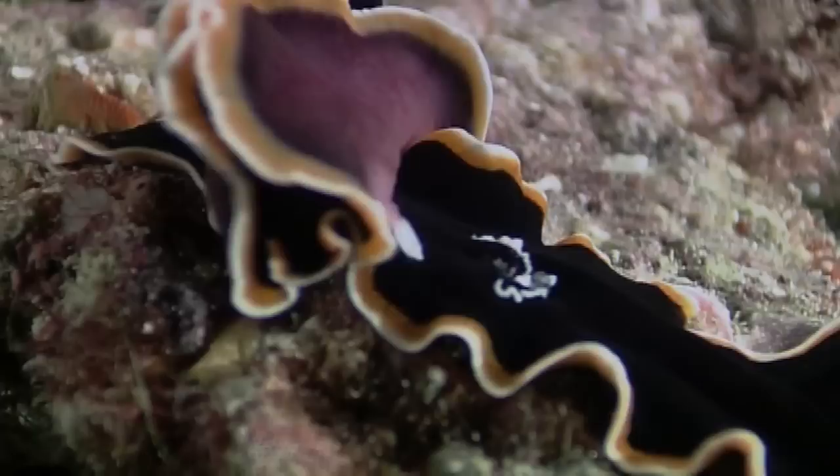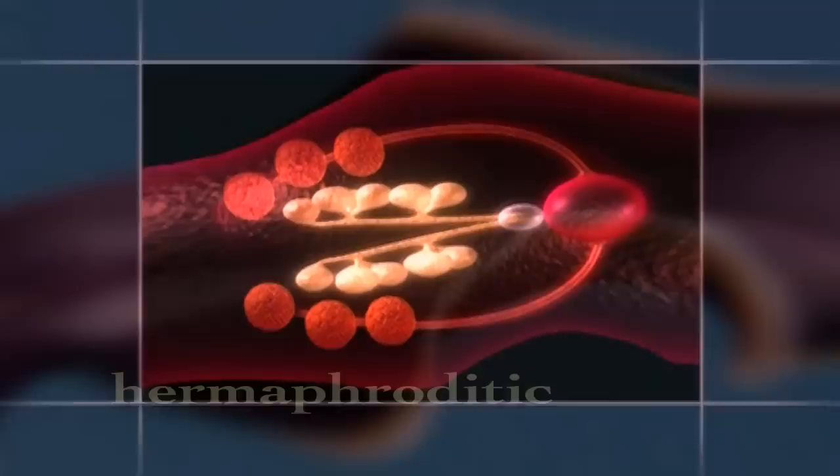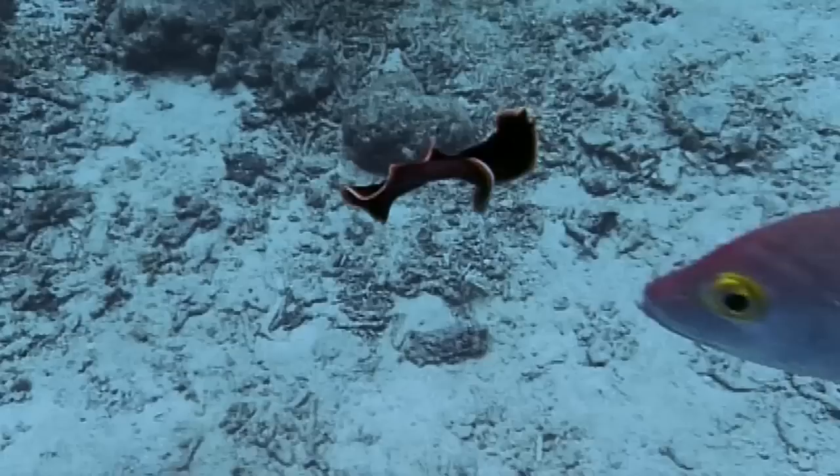Sperm can be injected anywhere on the skin where it's then absorbed. The losing flatworm must then bear the burden of motherhood, committing valuable resources to having offspring. Flatworms are hermaphroditic. They have both male and female sex organs. Being hermaphroditic is a great strategy to maximize the chances to reproduce.